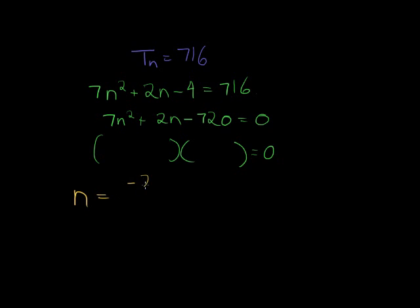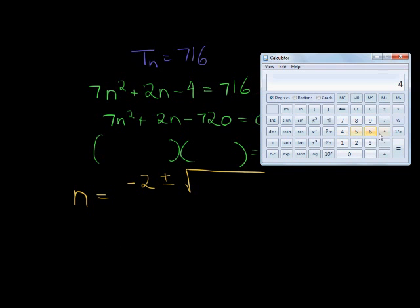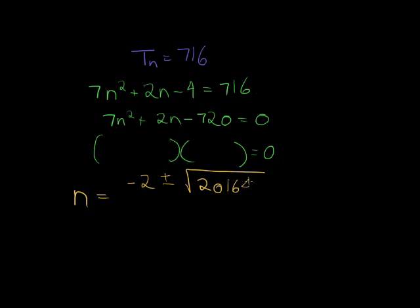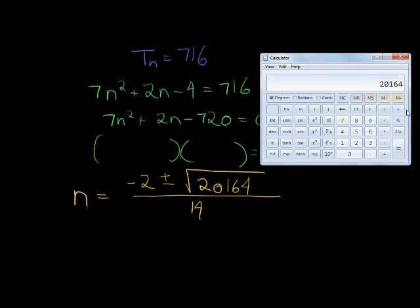Therefore I just say negative 2 plus minus the square root of, and let's calculate that. b squared, that means it's 2 squared is 4, minus 4 times 7, that's 4a times c which is 720 but a negative number, gives me 20164. All divided by 14 because it's 2 times a.